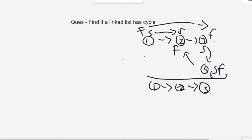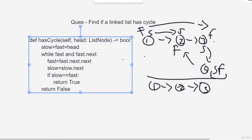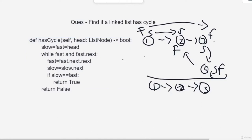Here is the code: we point slow and fast to the head. While fast and fast.next exist (meaning fast has not reached the end), we move fast two steps (fast.next.next) and slow one step. If at any point slow equals fast, we return True — it has a cycle. If we exit the loop, we return False. This is the slow and fast pointer technique. I'll provide a few questions based on this and linked lists as well.